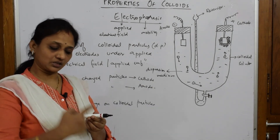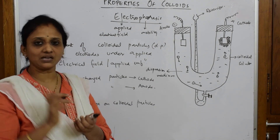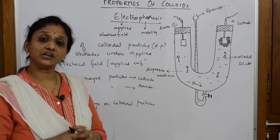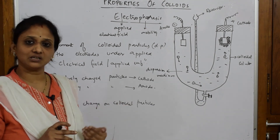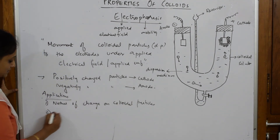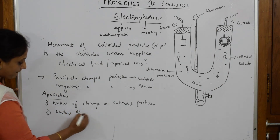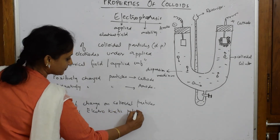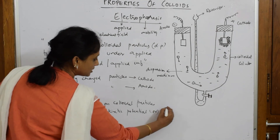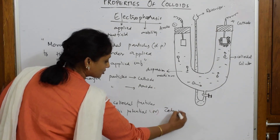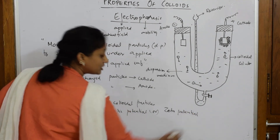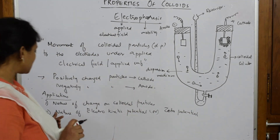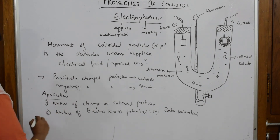Once a double positive charge is formed, the counter ion comes and attacks, meaning there is a formation of a double layer. So electrophoresis also explains the nature of electrokinetic potential or zeta potential — please watch the earlier video for details. Zeta potential is the potential difference between the fixed layer and the diffused layer. Electrophoresis also helps explain the nature of the electrolyte.